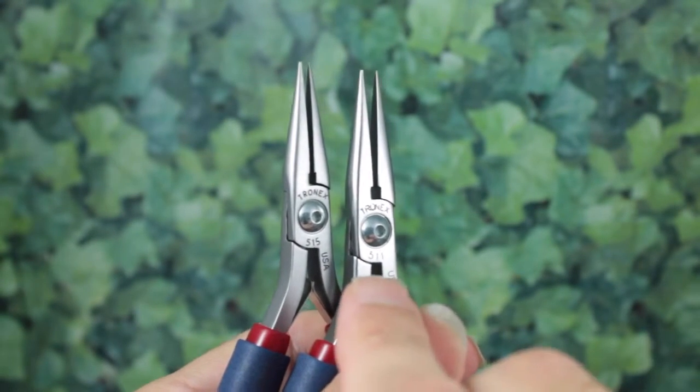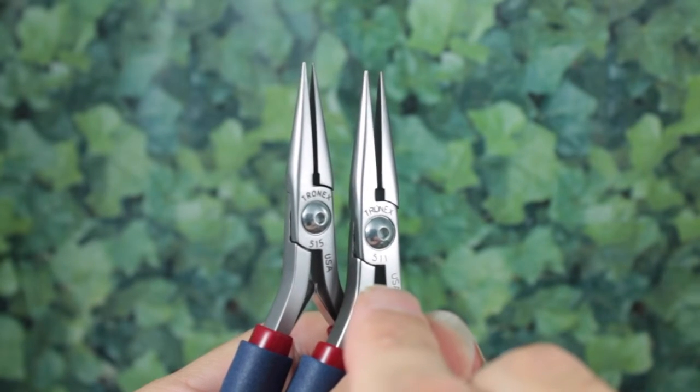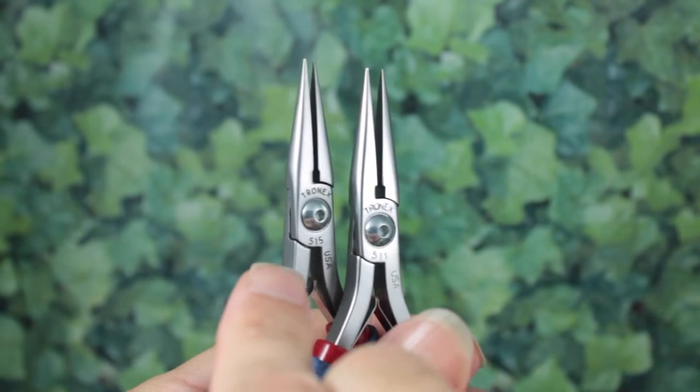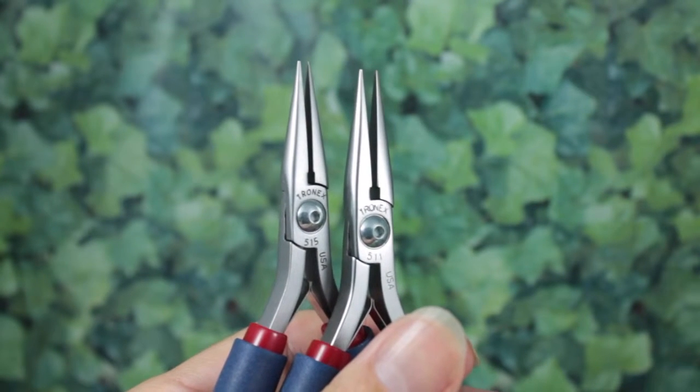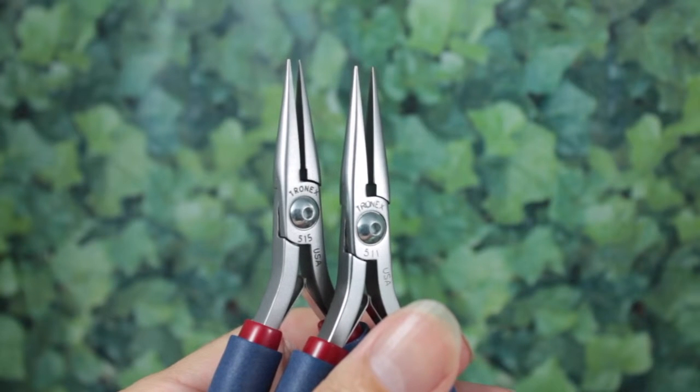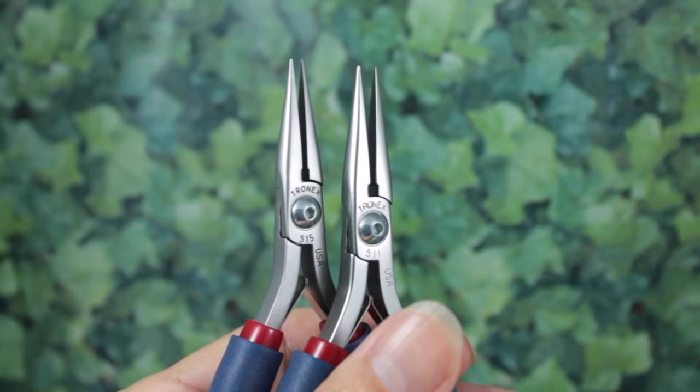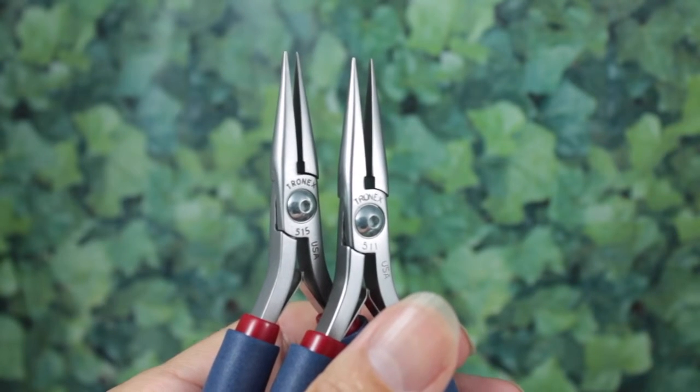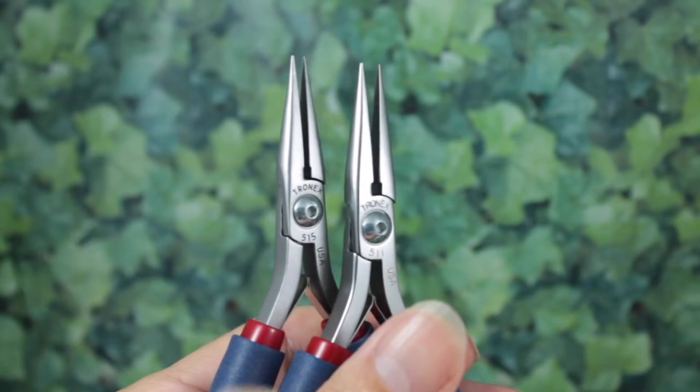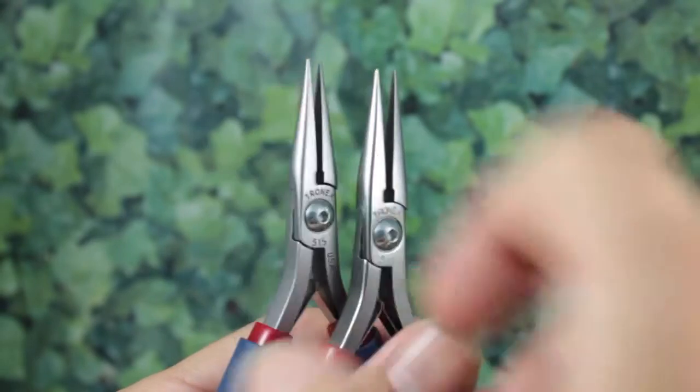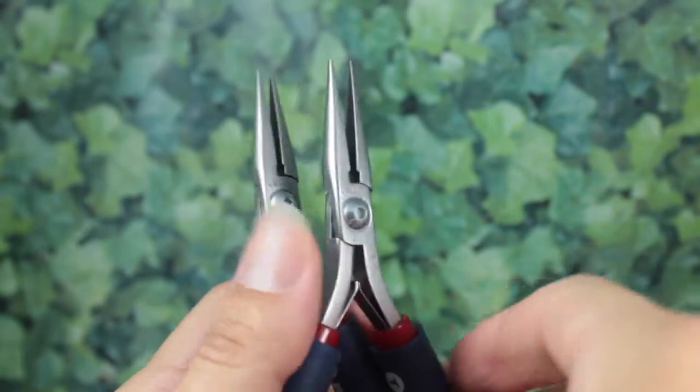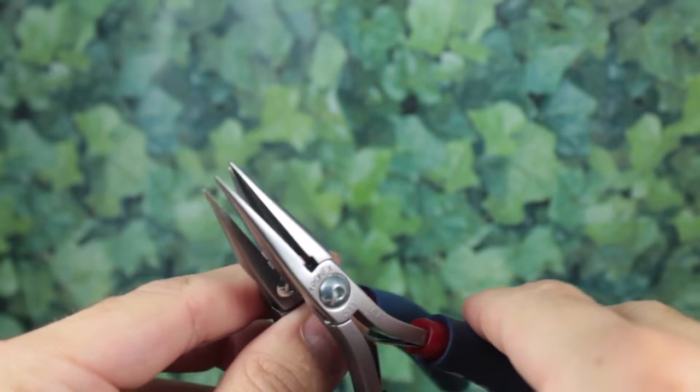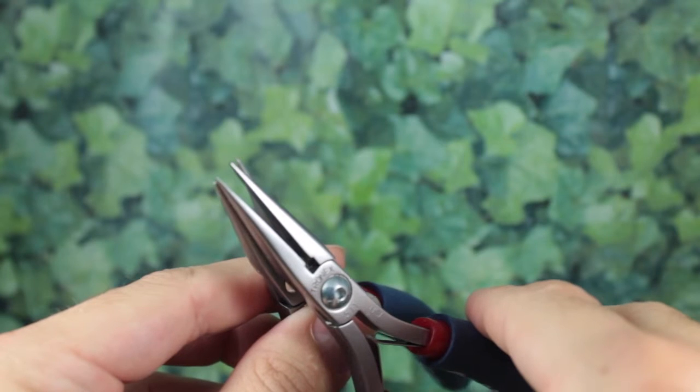Now here we have the 511s. So these are the current model of the long chain nose pliers. And again, we've got the new 515s at the back. So you might be forgiven for not being able to spot the difference initially. They're both about the same size. They're both the same length and they both have the Series 5 short handles. The difference only becomes apparent when you look at the tips. So these are the traditional 511s here.